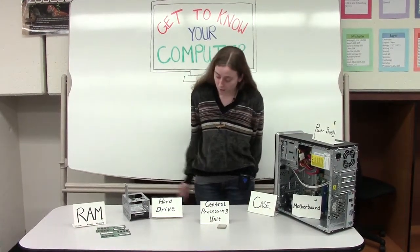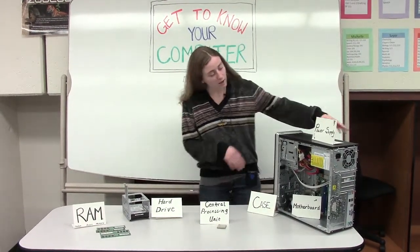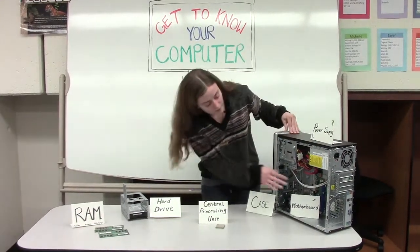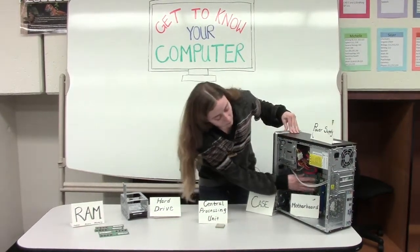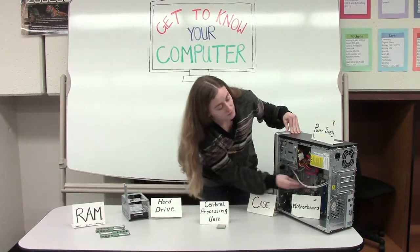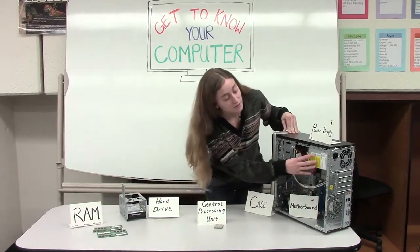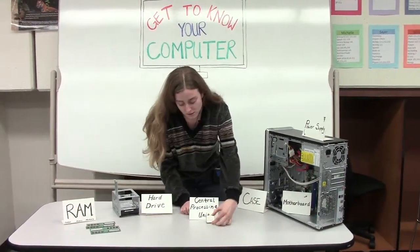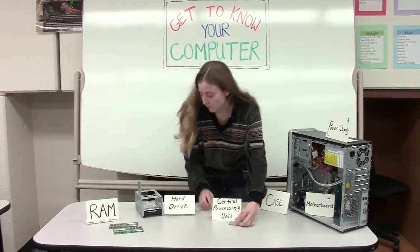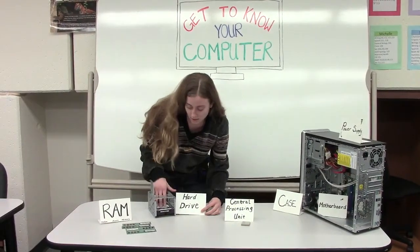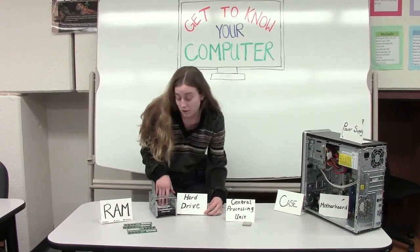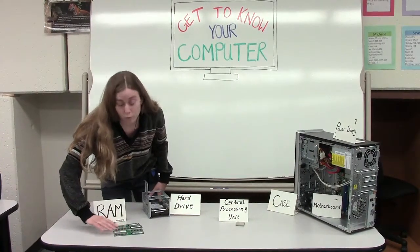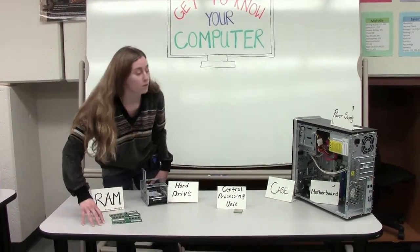So just as a brief overview: this is a case, this is the motherboard — this panel inside the case. This is a power supply. This here is called a central processing unit. This inside this case is called a hard drive. And these here are sticks of RAM, or random access memory.